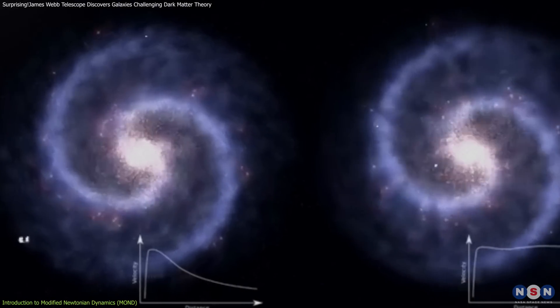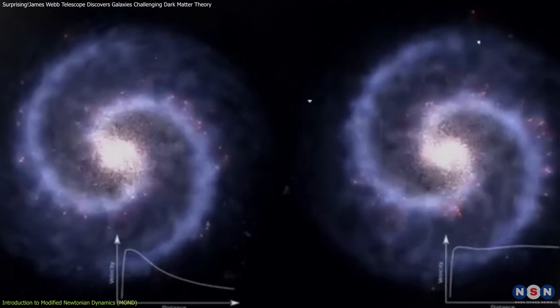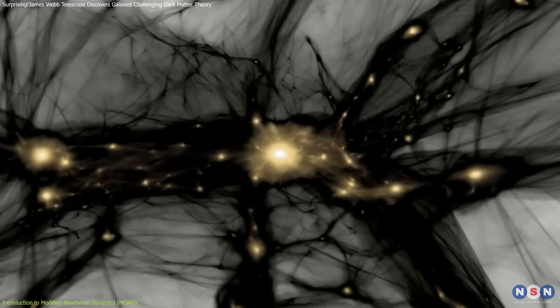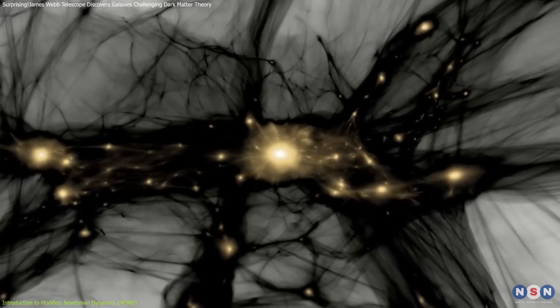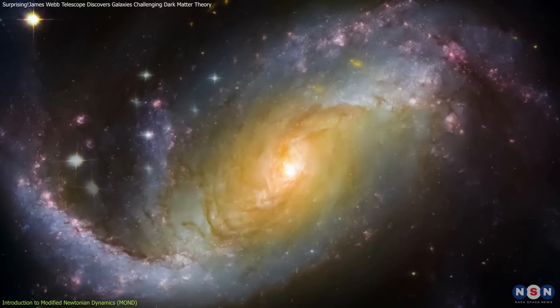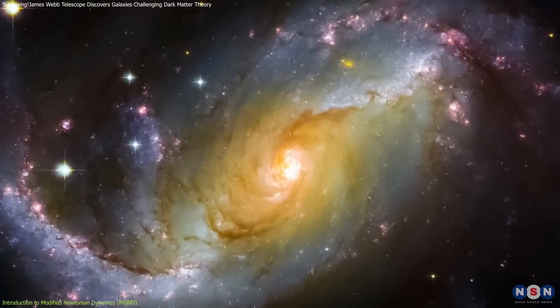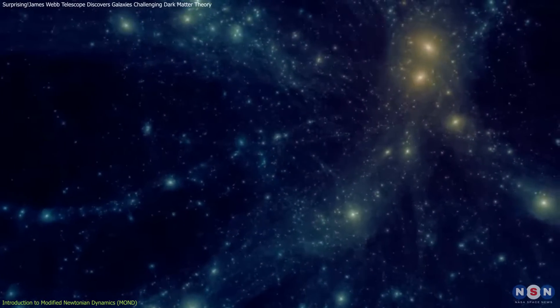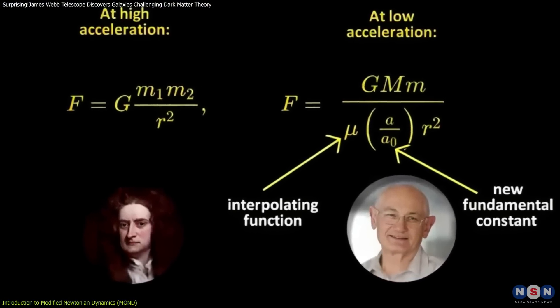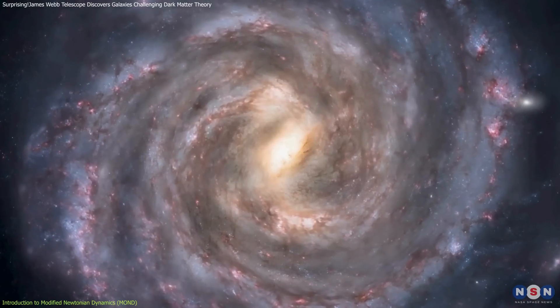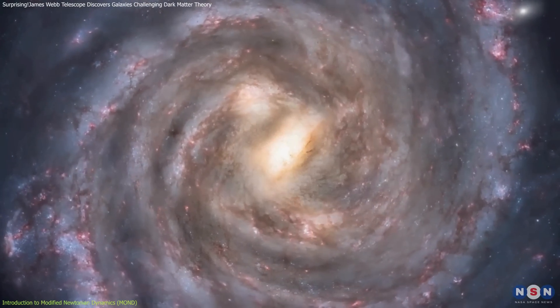Observations showed that stars on the outskirts of galaxies move much faster than they should based on the visible matter alone. The traditional solution was to introduce dark matter as an invisible halo surrounding galaxies, adding the extra gravitational pull needed to explain these high speeds. However, MOND suggests a different approach: instead of adding unseen matter, it proposes that the laws of gravity themselves change in these weak field conditions, providing the extra force needed to keep stars moving at higher speeds.